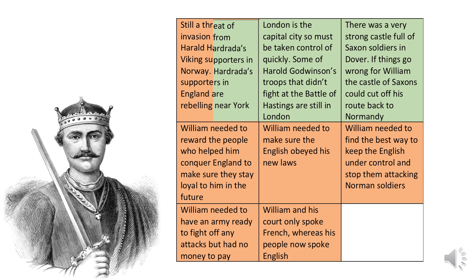For the extension question, I would pick box four: William needed to reward the people who helped him conquer England to make sure they stayed loyal in the future. The way people were rewarded was by being given land to rule over. To give them land, he had to take land off existing lords in England, creating friction and anger between Saxons and their new Norman lords — increasing the chances of rebellion and making it very difficult to keep control over the whole country.